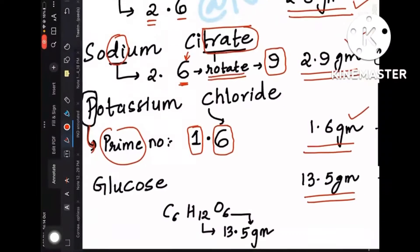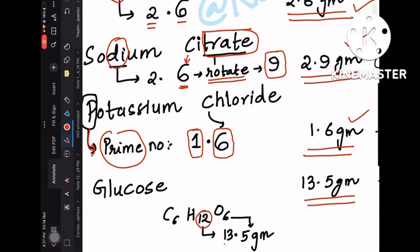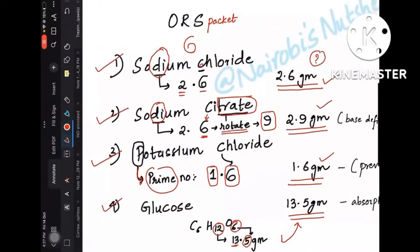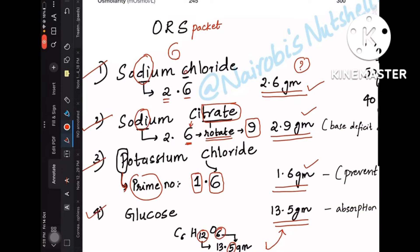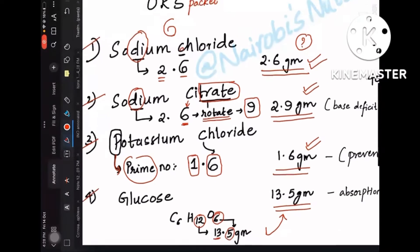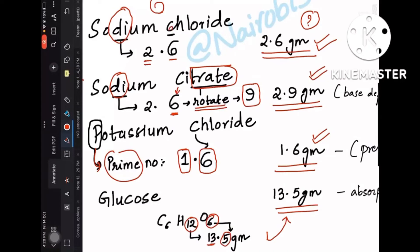Coming to the glucose, we know the formula of glucose as C6H12O6. From there itself we can derive: you have to add 1—13—and you have to subtract 1 from this 6, that is 5, so total is 13.5 grams.